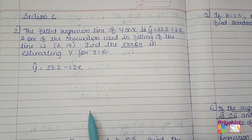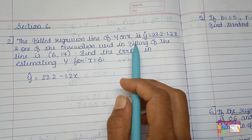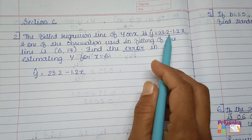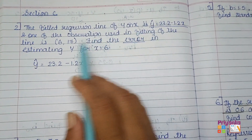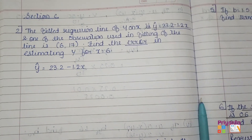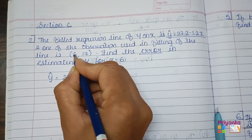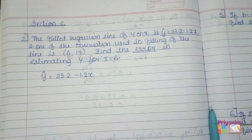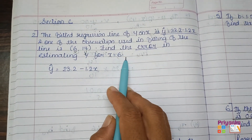Section C starts from page number 151 and the exercise questions start from the second question. The fitted regression line of y on x is y-cap equal to 23.2 minus 1.2x, and one of the observations used in fitting the line is (6, 17). Here x equals 6 and y equals 17. Find the error in the estimated y for x equal to 6.